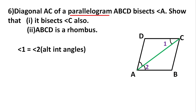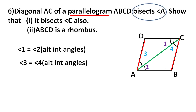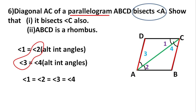The other pair of parallel sides are AD and BC, and AC is the transversal, so angle 3 equals angle 4. It is given that diagonal AC bisects angle A, meaning it divides angle A into two equal parts, so angle 2 equals angle 3. From this, all four angles are equal, so angle 1 equals angle 4, meaning diagonal AC bisects angle C also. That's the first part done.